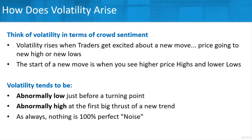And so it's causing this wider price range. The start of a new move is when you see higher highs and lower lows — you've got volatility. When a trend starts to establish, you're going to look for higher highs and lower lows, whether it's an uptrend or a downtrend. Volatility can give us an indication of when that move might be happening. Volatility tends to be abnormally low just before a turning point and abnormally high at the first big thrust of a new trend.